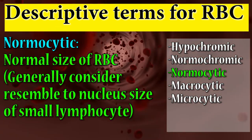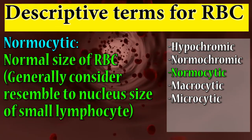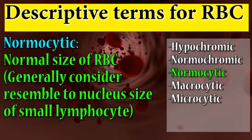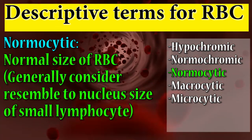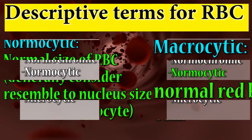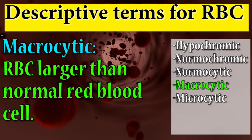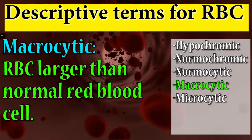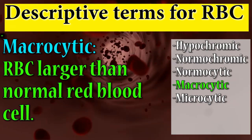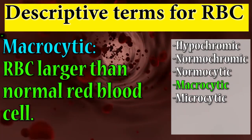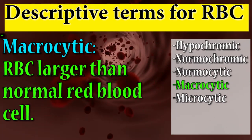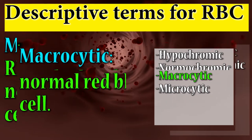Normocytic means normal size of RBC. Macrocytic means an RBC larger than a normal red blood cell.